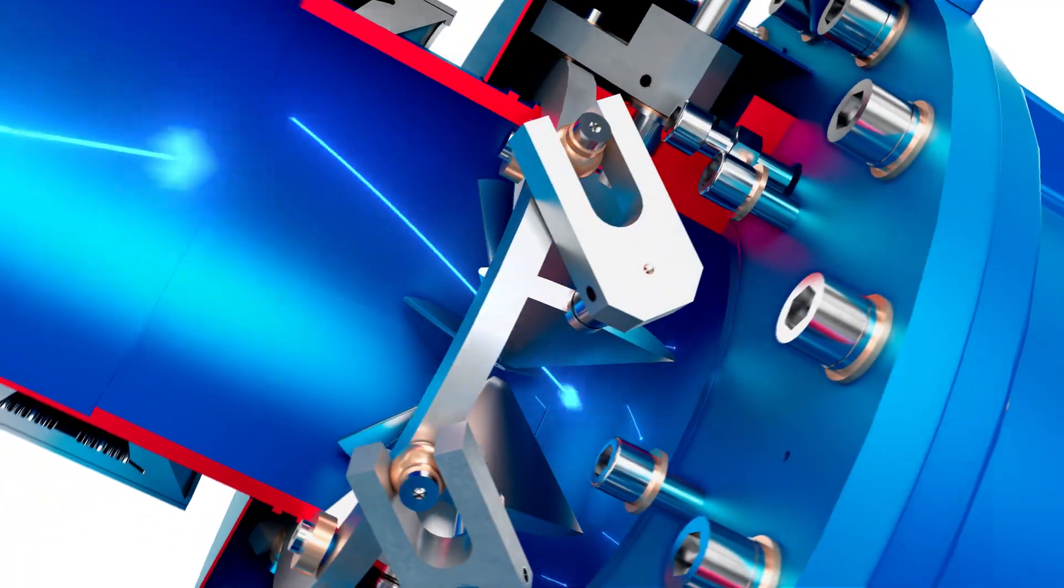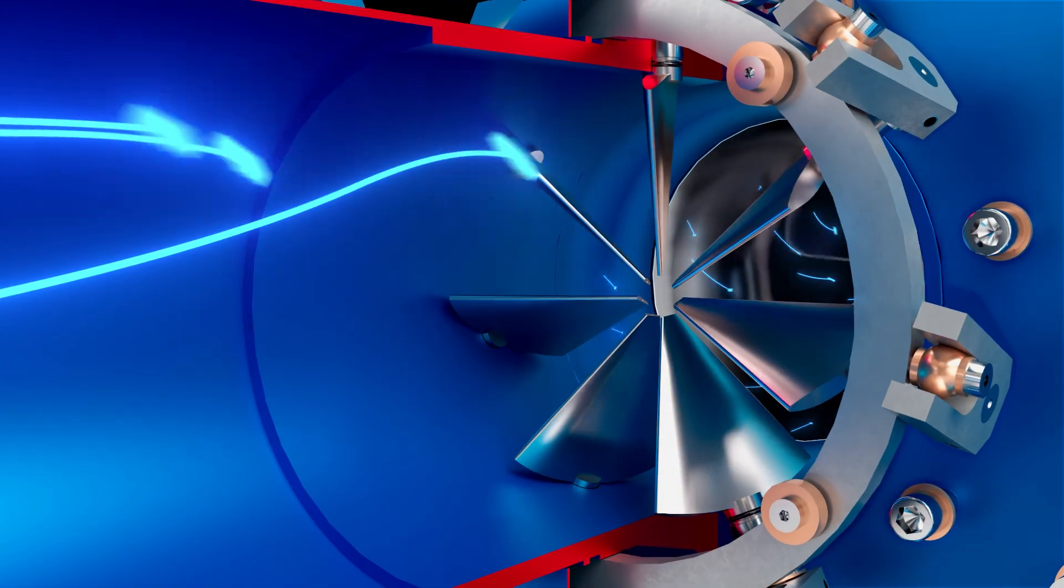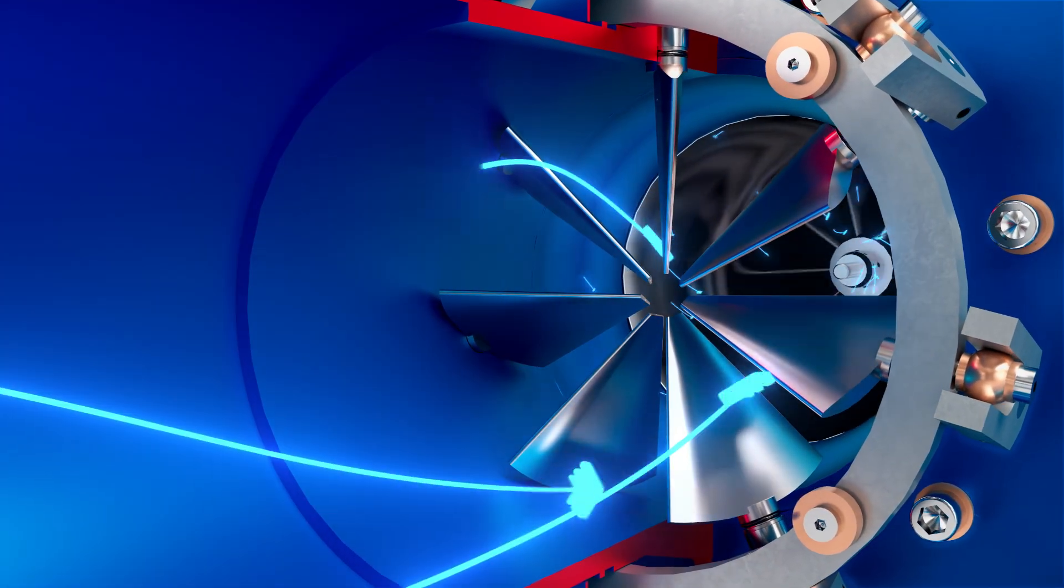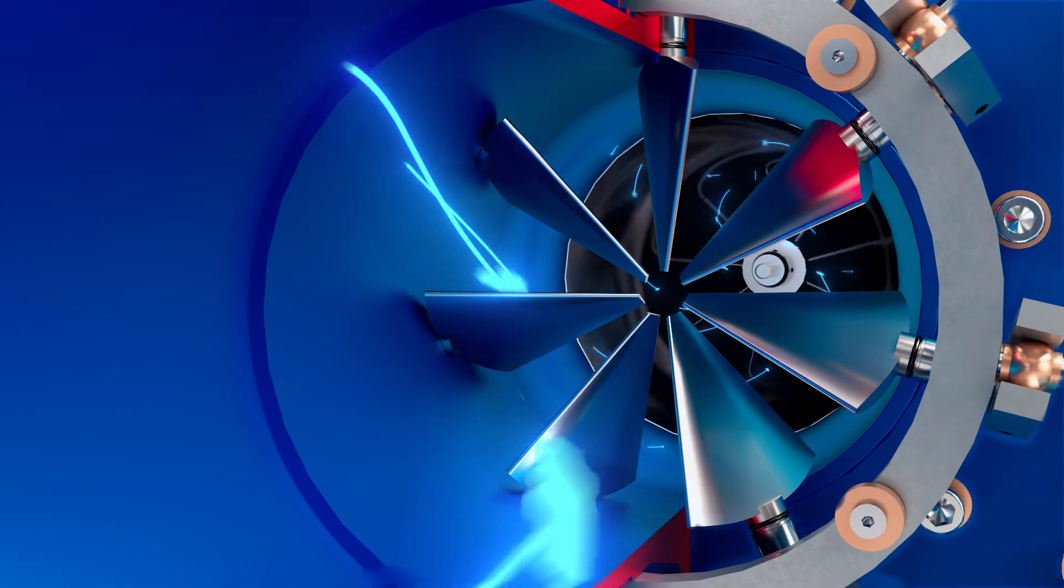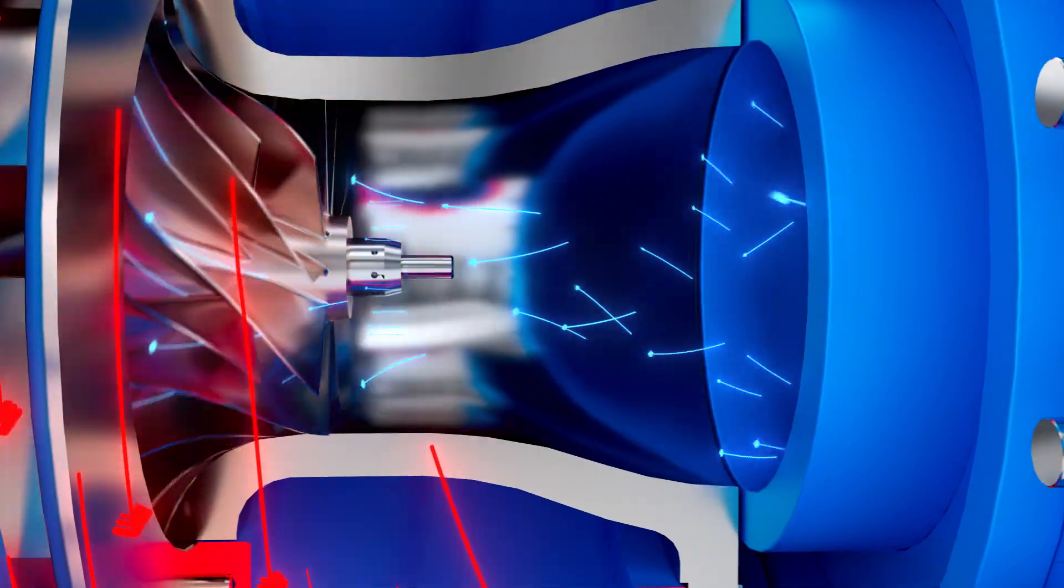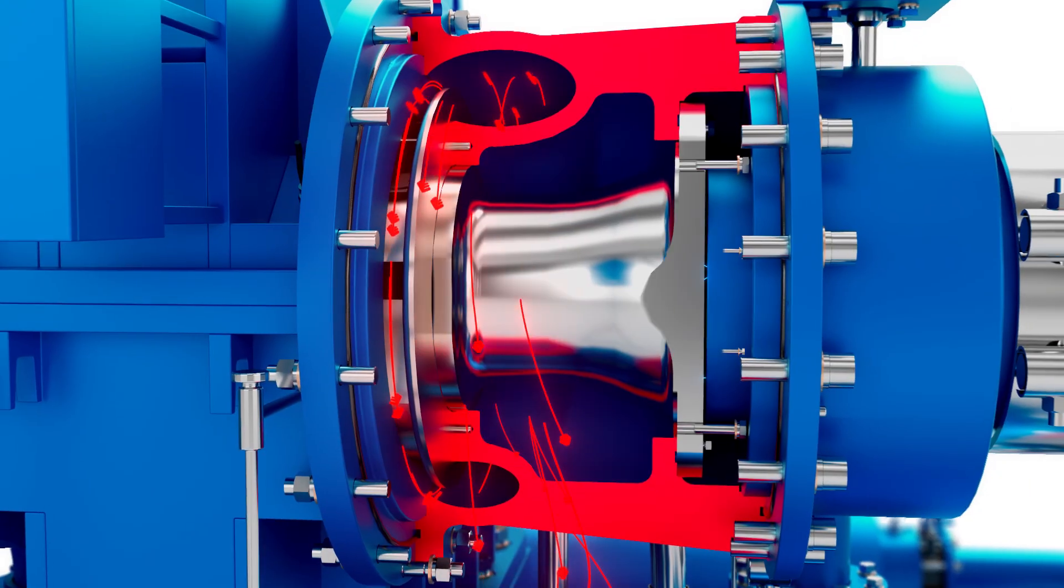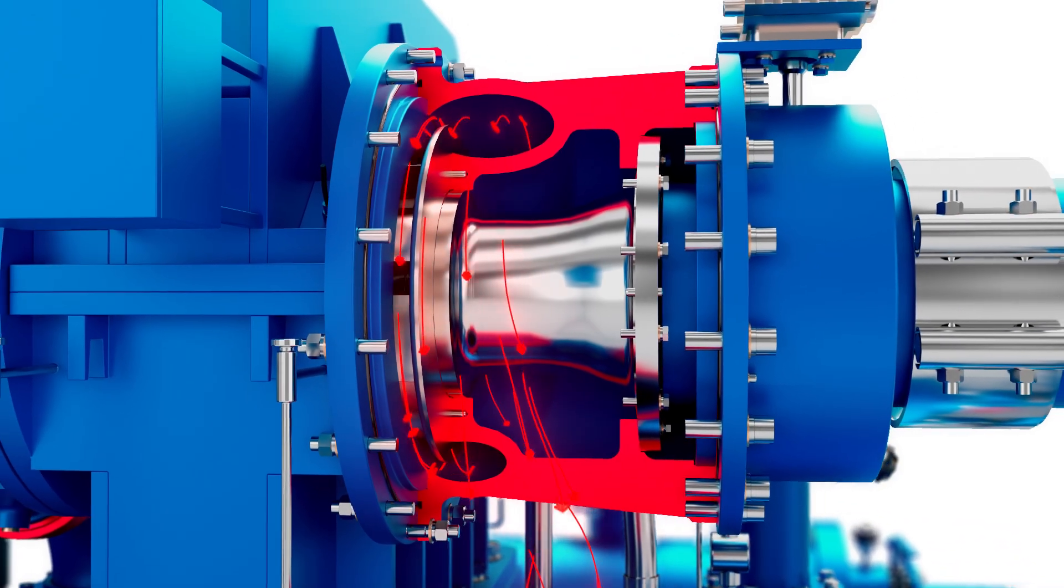The impellers draw in ambient air and accelerate it. As the air moves through the impeller, it gains velocity before reaching the diffuser vanes. When the high-speed air hits the diffuser vanes, it slows down, converting kinetic energy into pressure and heat.